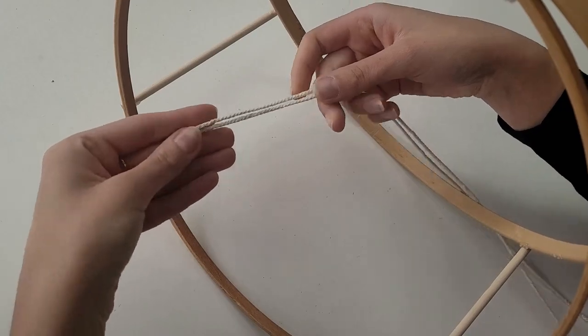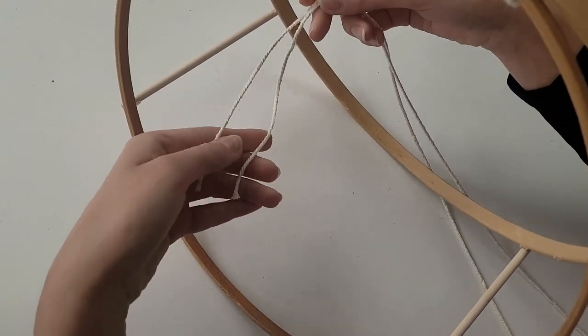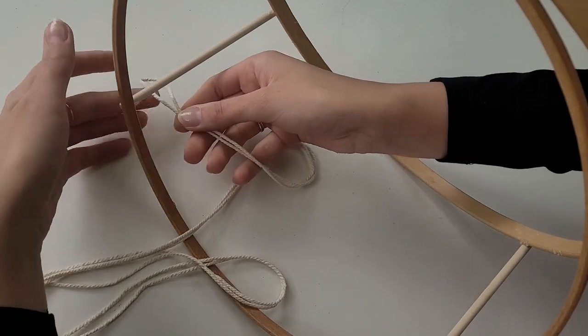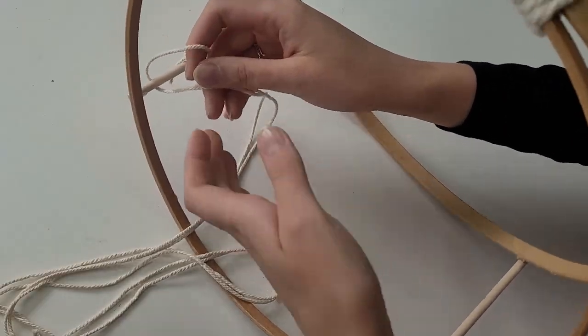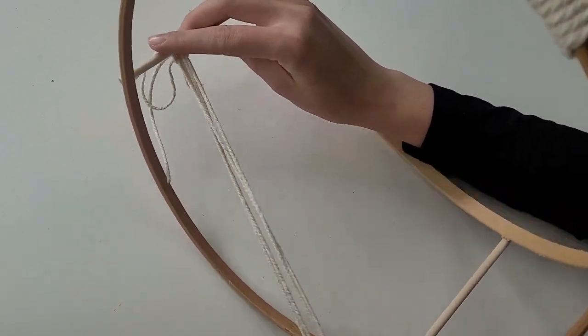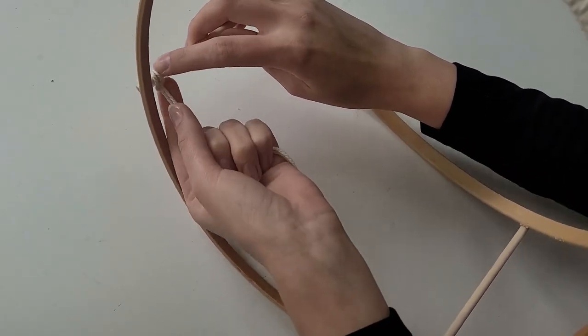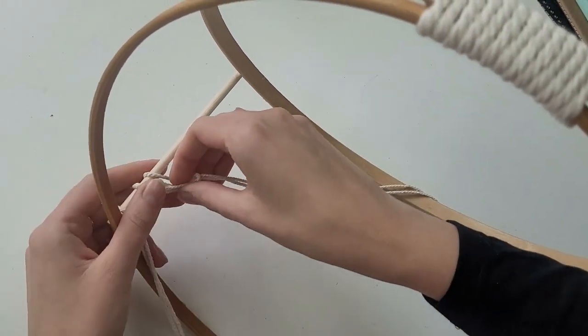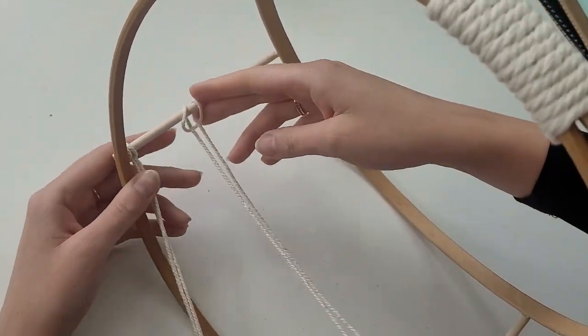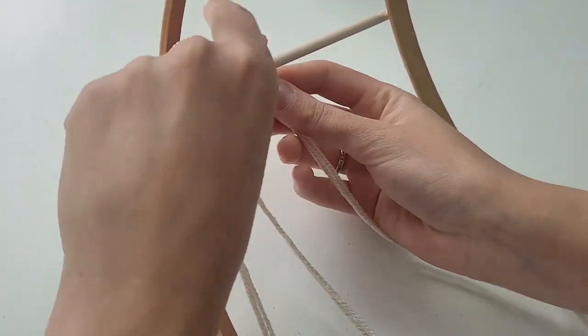To create my design I will be using 20 cords, each one 300cm long and I'm using 3mm thick cord. All these numbers of course depends on what size is your cord, how big is your hoop and what design you are going for. What's only important, to use again even number of cords.